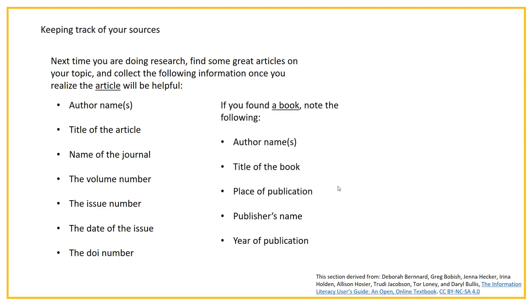If you found a book that you think is going to be useful, this is the information you tend to need: the author name, title of the book, place of publication, publisher's name, and year of publication.